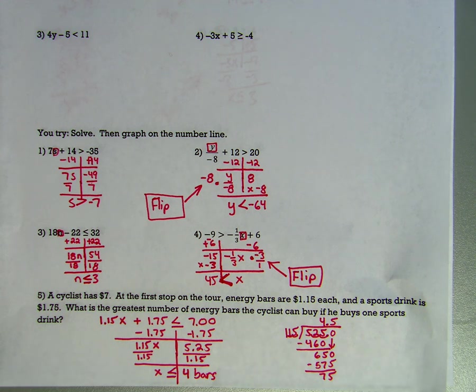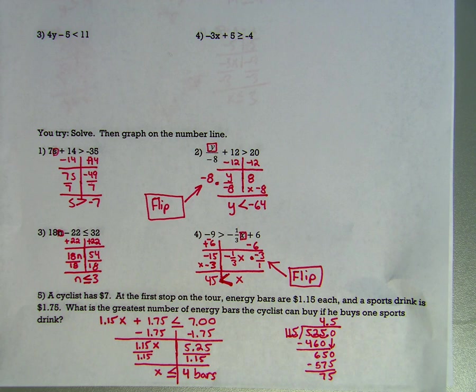Number 3: 18n minus 22 is less than or equal to 32. Add 22 to both sides, then divide by 18, and n is less than or equal to 3.